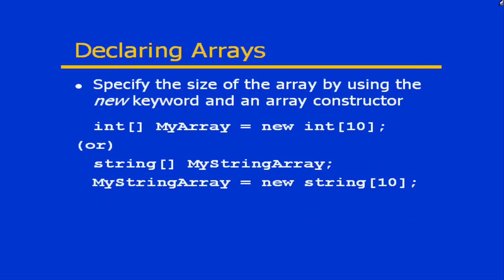To actually create the instance of the array, the next step is to call the array constructor. Since an array is technically an object based on that System.Array base class, we're going to use the new keyword to create our instance of that array. Assuming we're creating the instance at the point the variable is defined, we might use a statement like: int[] myArray = new int[10]. This statement would create an array of 10 integers.